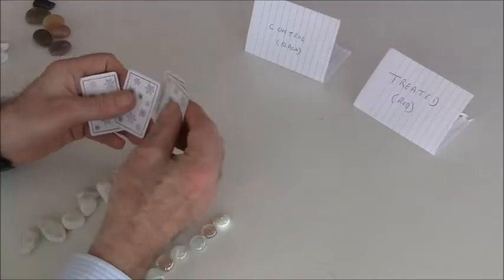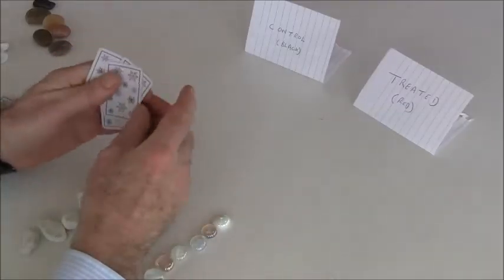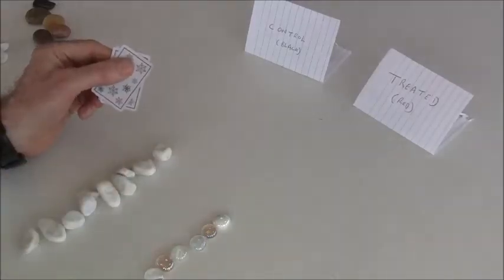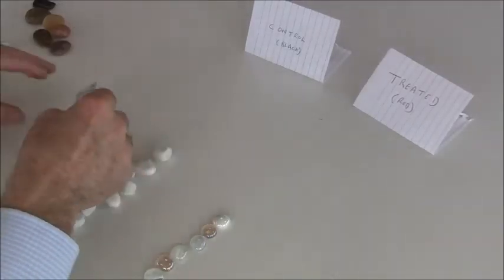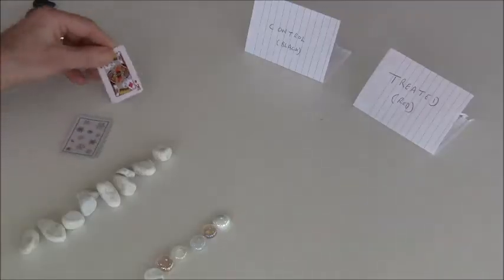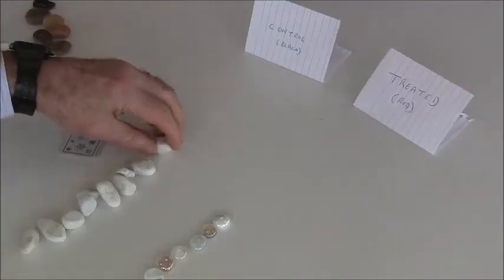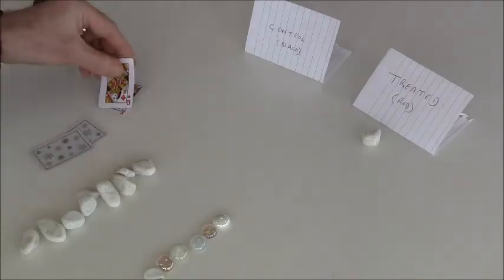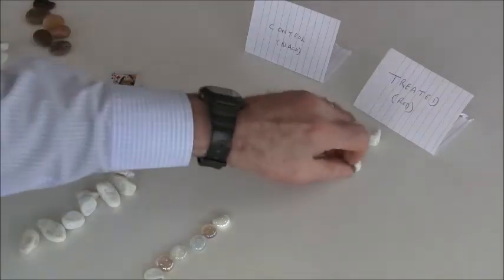So now we shuffle the cards, although of course in reality you do this on a computer, you don't use cards. And then we choose one of the groups to randomize. So let's say we'll randomize the stones to start with. So we turn over a card and we get a red card, so one of these patients gets into the treated group. Then we turn over the next card and again another one is into the treated group.